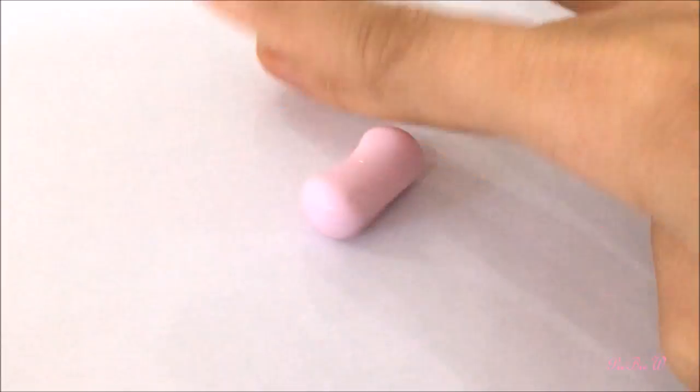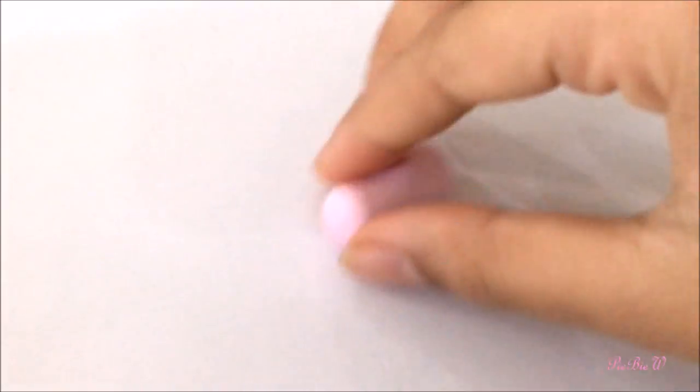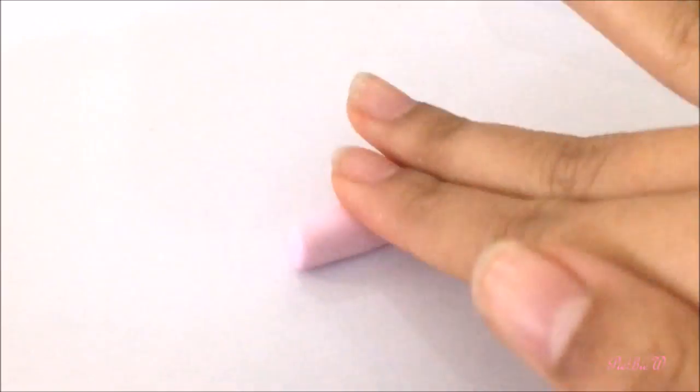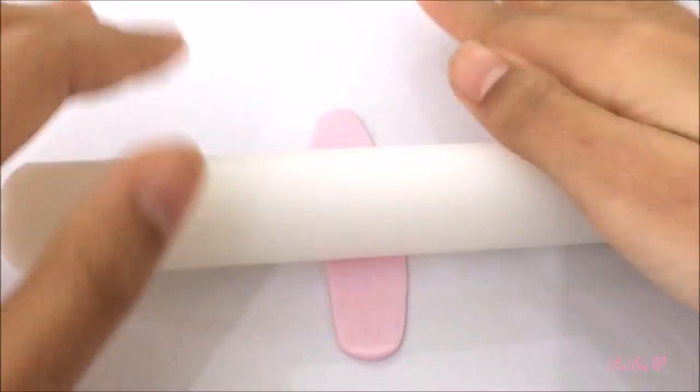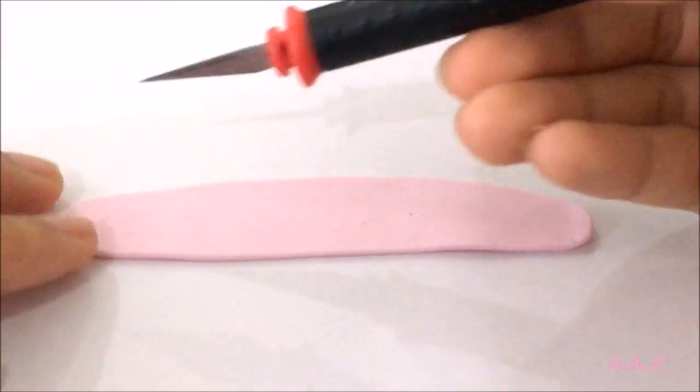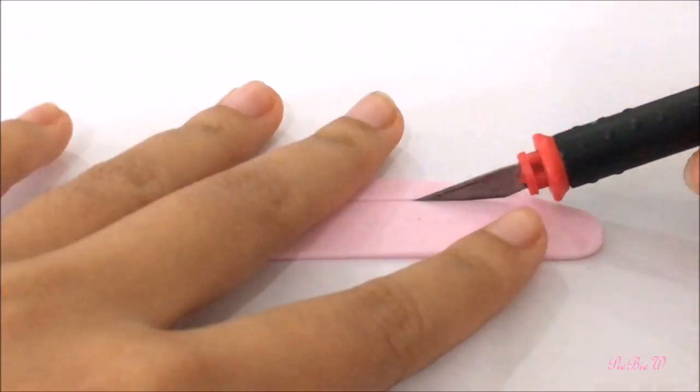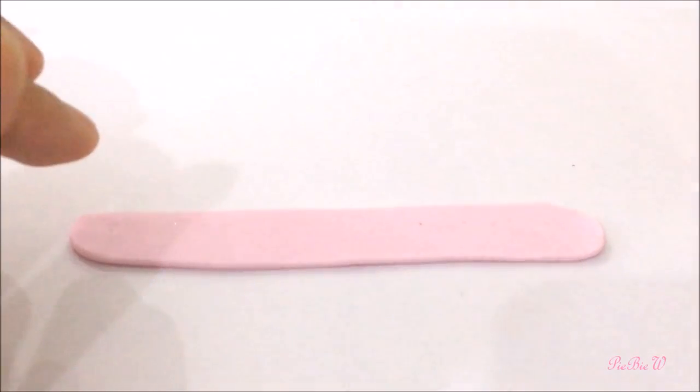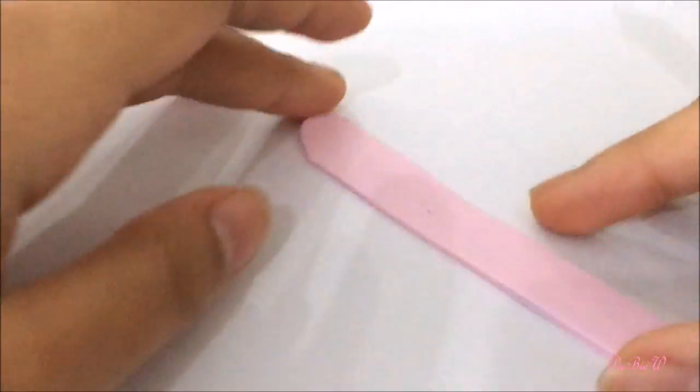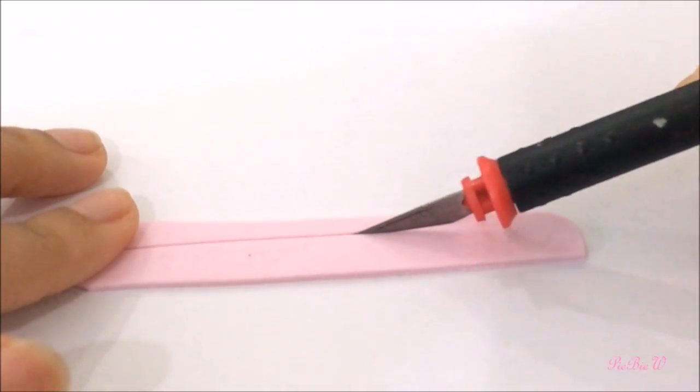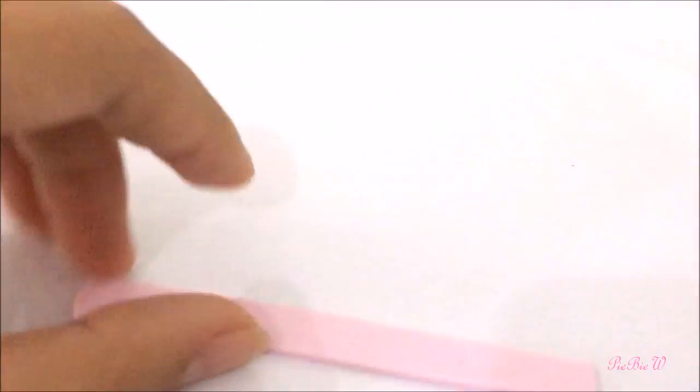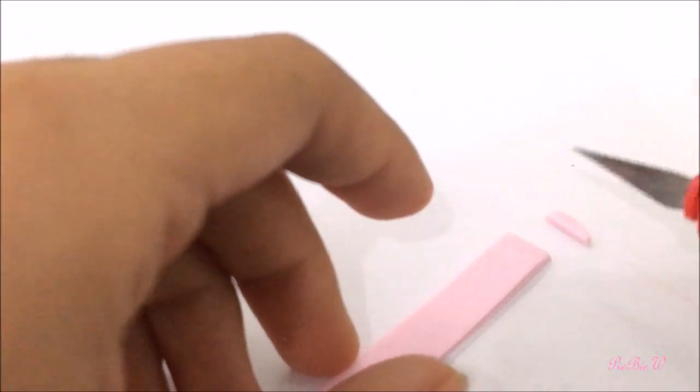First we're going to need some pink clay and roll it out into a log. Then using your rolling pin we're going to flatten it out but not too thin. And then take out the X-Acto knife and cut it out into a strip with a width of one centimeter. Afterwards we're going to cut out two identical strips.